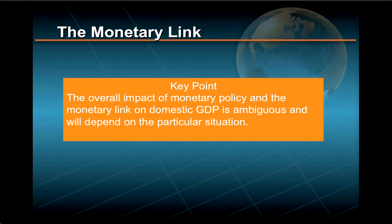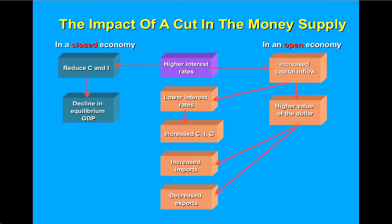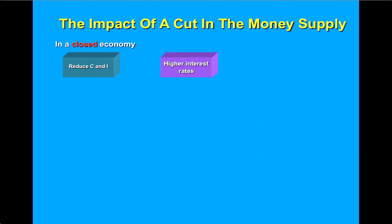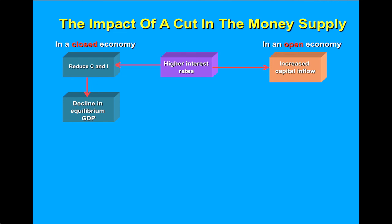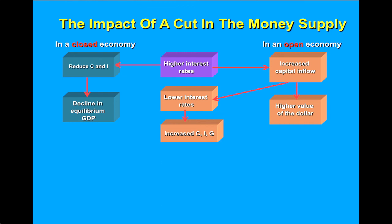And here's an important point regarding this link. Unlike with fiscal policy and the multiplier link, the overall impact of monetary policy and the monetary link on domestic GDP is ambiguous and will depend on the particular situation. This point is reinforced in a figure illustrating the impact of contractionary monetary policy in a closed versus an open economy. In a closed economy, a cut in the money supply reduces consumption and investment and helps relieve inflation pressures. However, if the money supply reduction increases domestic interest rates, this may trigger additional capital inflows, which may frustrate monetary policy by increasing the money supply and holding down interest rates. These lower rates may increase aggregate demand. The increased capital inflows may also tend to increase the value of the U.S. dollar and widen the trade deficit.